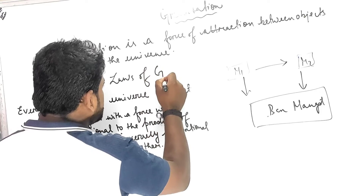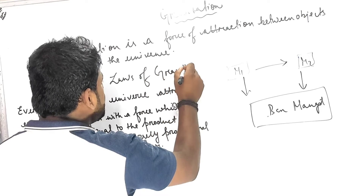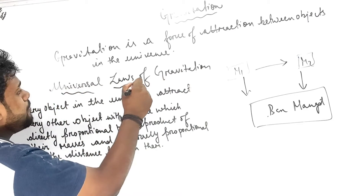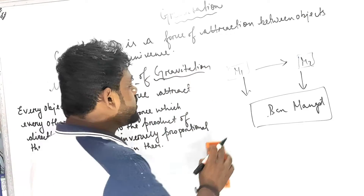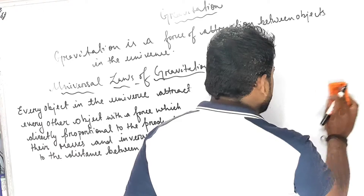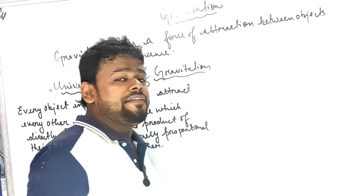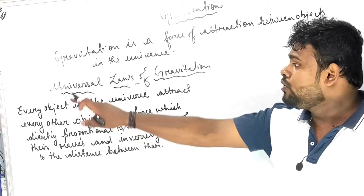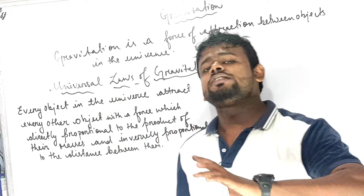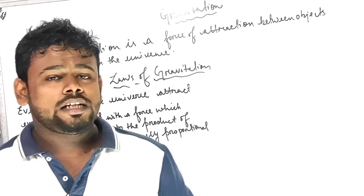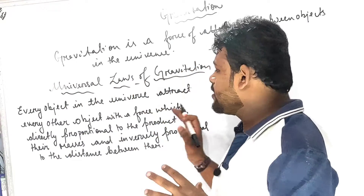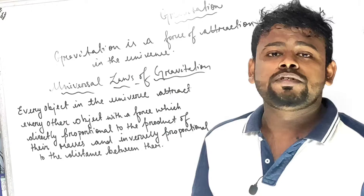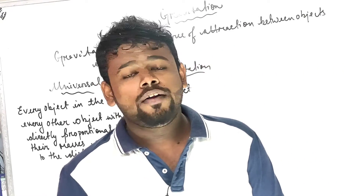Universal Law of Gravitation — very very important. It means that gravitation is everywhere in the universe. This is the heart of the gravitation chapter. Let us now look at its definition.